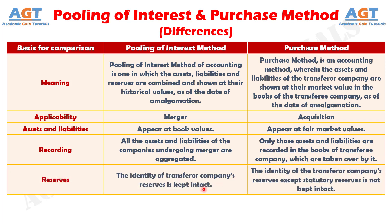Difference number 5: in pooling of interest method, the identity of the transferor company's reserves remains the same, whereas in purchase method, the identity of the transferor company's reserves — except statutory reserves — does not remain the same.